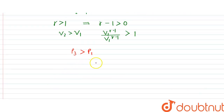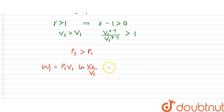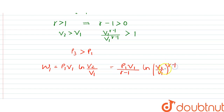We also need to find the work done. The work done in the first process — the isothermal expansion — is W1 = p1·v1·ln(v2/v1). This can be shown to be less than p1·v1·[(v2/v1)^(γ−1) − 1] / (γ−1).